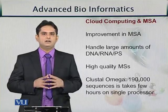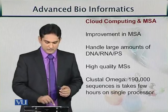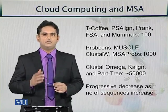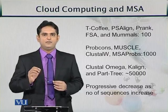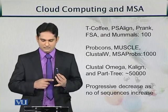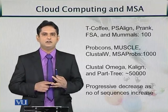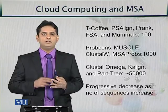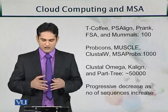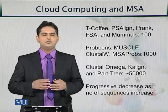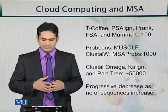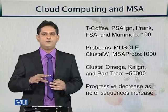A study took 18 different MSA algorithms with the goal of aligning 50,000 genome sequences. The results were striking: Tea-Coffee, PS-Align, Prank, FSA, and Mummals could only align up to 100 sequences — beyond that they broke down. ProPcons, Muscle, ClustalW and similar tools could only handle up to 1,000 sequences. Only Clustal Omega, K-Align, and Part3 were able to align roughly 50,000 sequences.